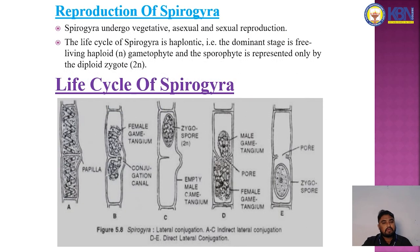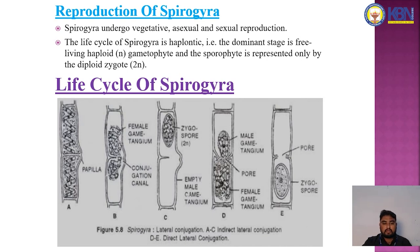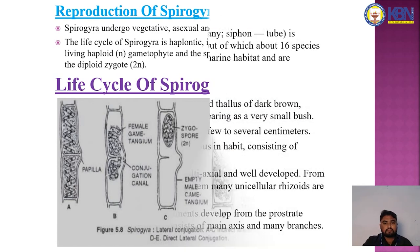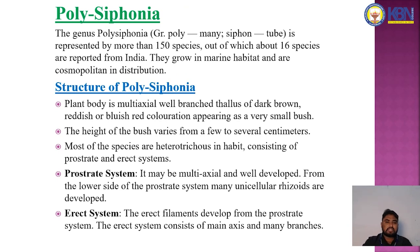The reproduction of Spirogyra: Spirogyra undergoes vegetative, asexual, and sexual reproduction. The life cycle of Spirogyra is haplontic. The dominant stage is the free-living haploid gametophyte, and the sporophyte is represented only by the diploid zygote. They form the papilla, then the conjugation canal, then pores, and divide to form spores.